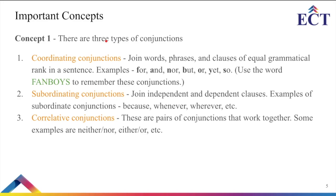The second type is subordinating conjunctions. These join independent and dependent clauses. Examples of subordinating conjunctions are: because, whenever, wherever, etc. You have one dependent clause and one independent clause, and when you combine both you use a subordinating conjunction. The third type is correlating conjunctions. These are pairs of conjunctions that work together — for example, neither/nor, either/or, etc.